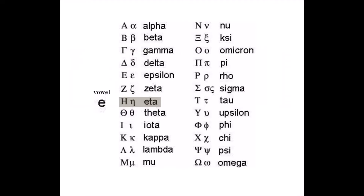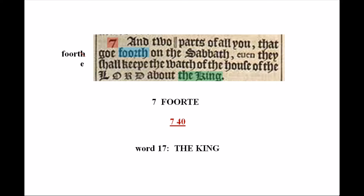Verse 7 begins with margin notes dividing the words into two parts. I read this as a clue to start counting after the divide. When we do that, the 7th word is 'fourth.' In classical Greek, H or Eta was used for the long vowel E. So 'fourth' is read as 40, and with the verse number it's 740. If we then count from 'fourth,' or 40, the 17th word becomes 'the king.' According to the Prince Tudor theory, Edward de Vere believed himself to be Edward VII. So here we have his king number, 740, and his earl number, 17, and 'the king.'